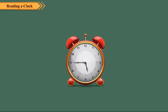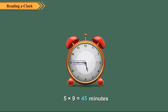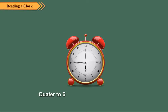Observe this clock. The hour hand is between 5 and 6. The minute hand is at 9, that is, in the 2nd half hour. So, 5 multiplied by 9 is equal to 45 minutes have passed. It means the minute hand has yet to travel 15 minutes or 1 quarter to reach the next hour of 6. So, the time is quarter to 6 or 5.45.